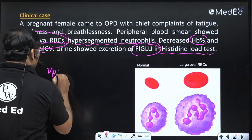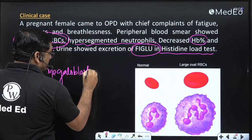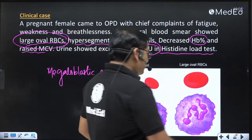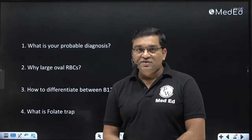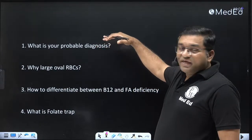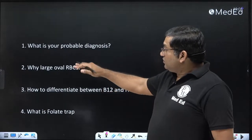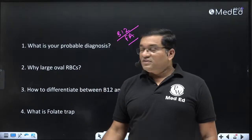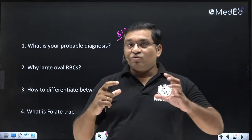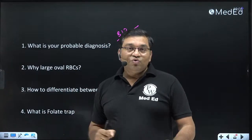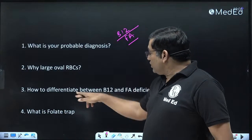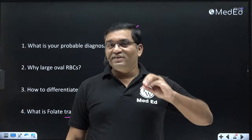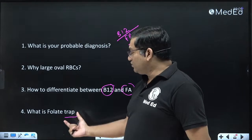The diagnosis is megaloblastic anemia; the question is whether due to folate deficiency or B12 deficiency. Sub-questions that can be asked from this clinical case include: What is your probable diagnosis? Why are there large oval RBCs? Why is there a larger cytoplasm and small size nucleus? How to differentiate between B12 and folate deficiency? What is the folate trap, and what is functional folate deficiency?